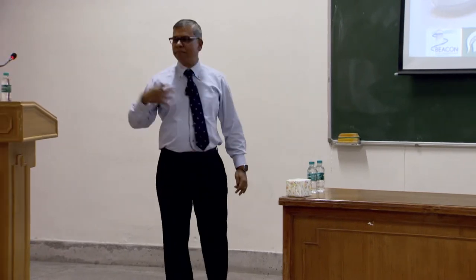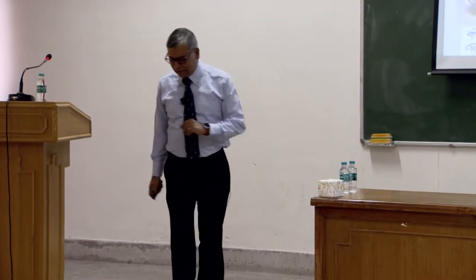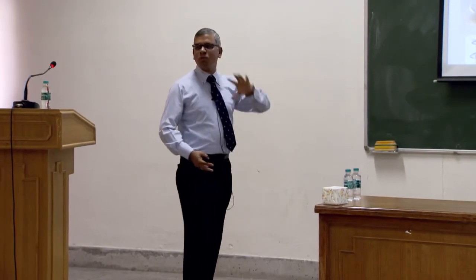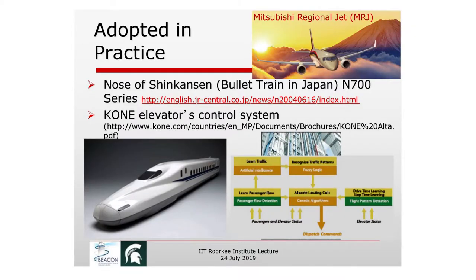Interestingly, someone at the conference commented that because a genetic algorithm was used, the nose looks like a snake. From certain angles it actually looks like a living object. There may be a connection between how the solution is represented, how we use these operators, and what nature has been doing — or it could simply be a coincidence.